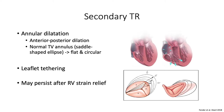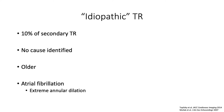Secondary TR frequently manifests as annular dilatation, where the normal tricuspid valve annulus, which is usually saddle-shaped and elliptical, becomes flatter and circular as it dilates in the anterior-posterior direction. It may also involve leaflet tethering, and unfortunately sometimes these changes may persist even after relief of the RV strain. Idiopathic TR comprises 10% of secondary TR and occurs when there's no obvious cause identified; it appears more commonly found in older patients with atrial fibrillation leading to extreme annular dilatation as a proposed mechanism.